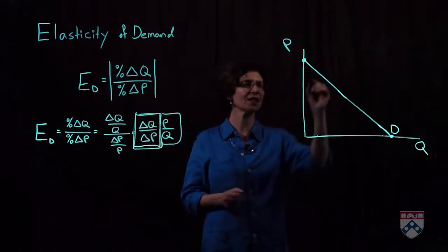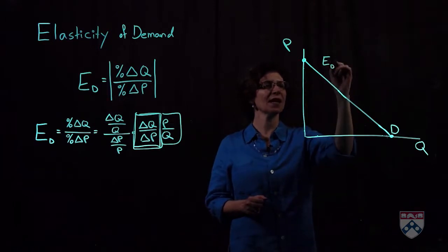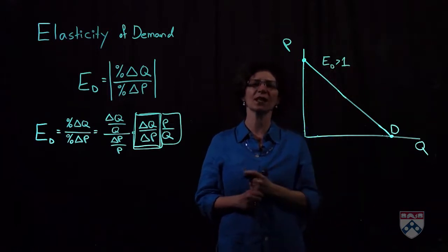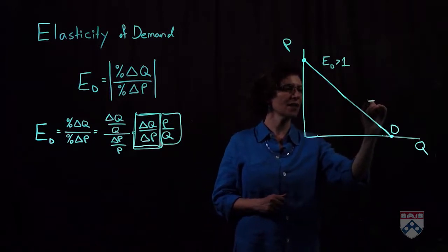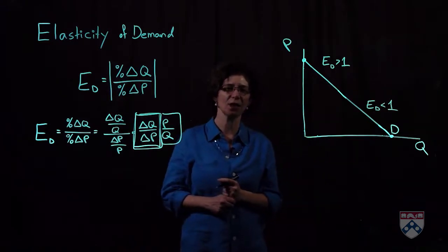And specifically, in the top region, demand is elastic with an elasticity of demand greater than one. And down towards the bottom, demand is inelastic with elasticity of demand less than one.